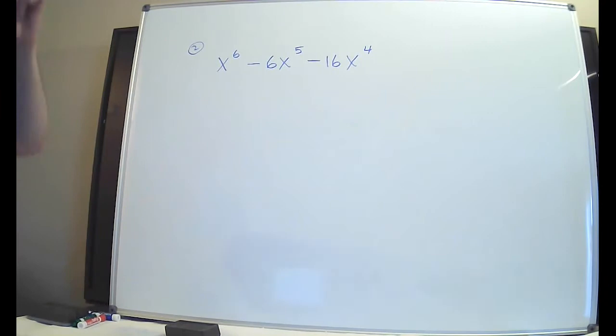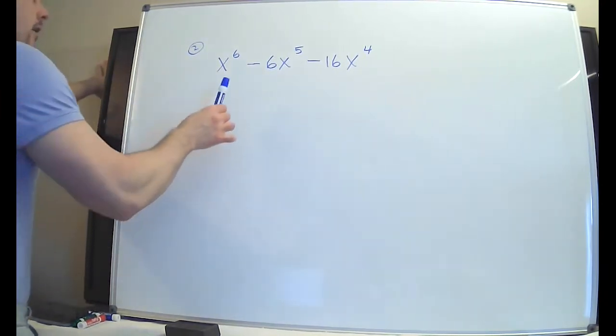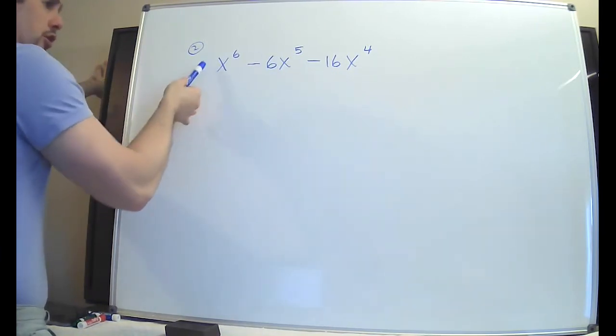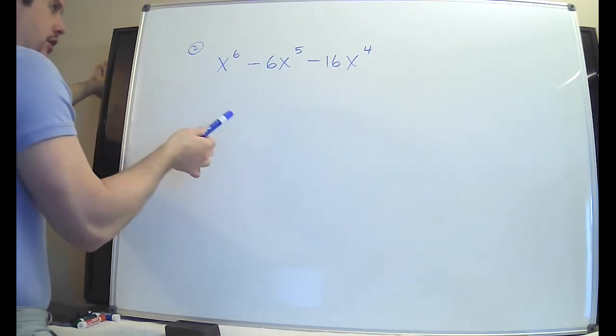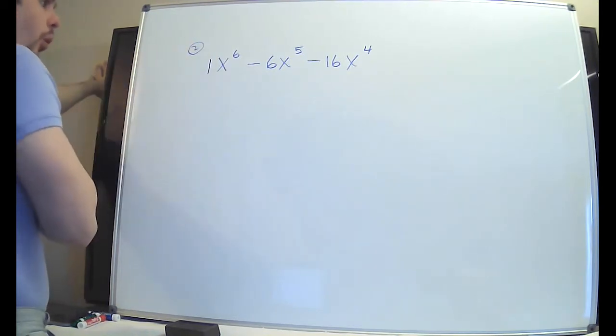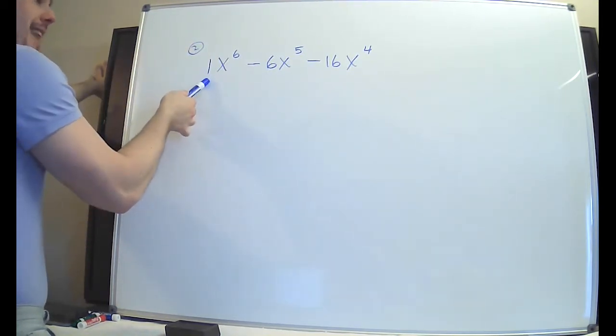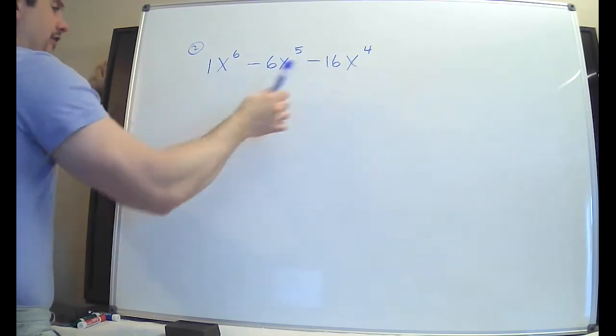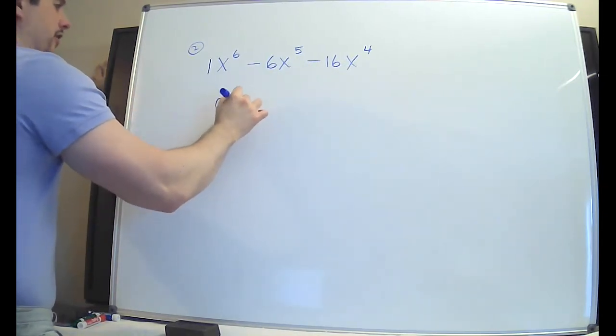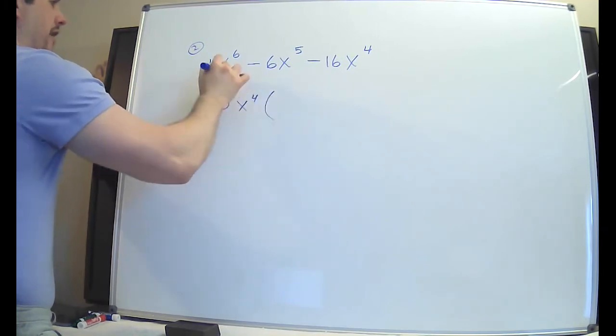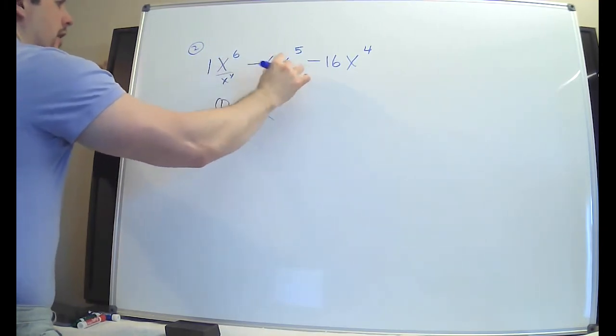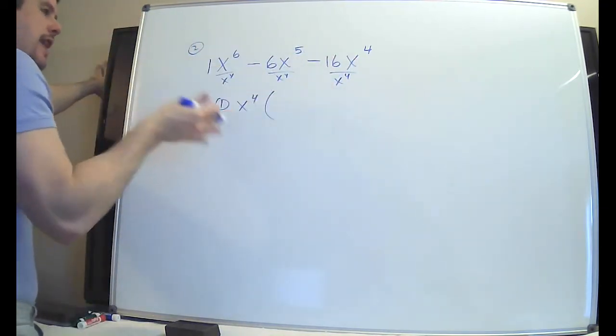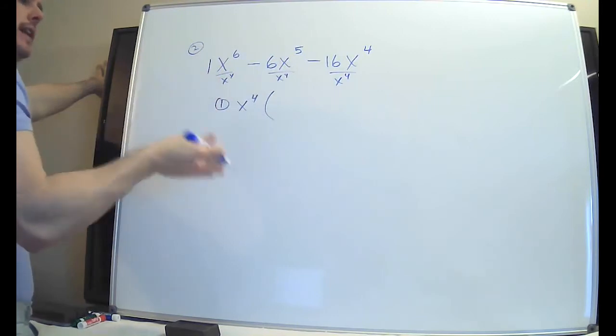All right. So this is the second one. Now, the tricky thing here is that you see the six and the 16, and they're both divisible by two. So you might think that you can factor out a two. The problem is that there's an invisible one there. This is certainly not divisible by two. The only thing that these three terms have in common is an x to the four. So your first step is going to be take x to the four and factor it out. And again, if you want to write it underneath to help you see it visually, then do that. If this helps you get it right, do it.